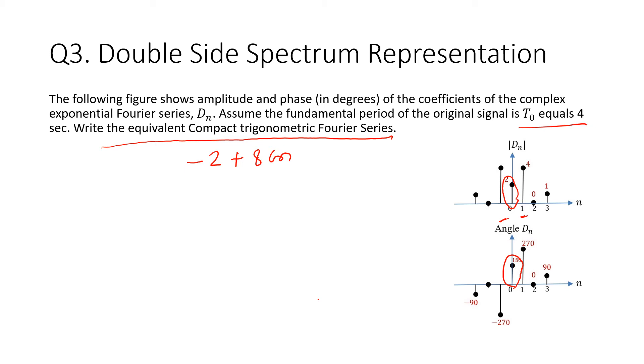So we'll get 8 cos(2πn·t). This is n, so we have to know the frequency. The frequency is 1 over T₀, so it's going to be 1 over 4. This is f₀. Or if you want, ω₀ is going to be multiplied by 2π; it's going to be π over 2.